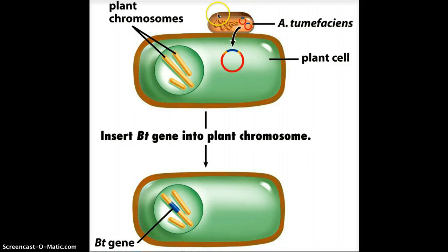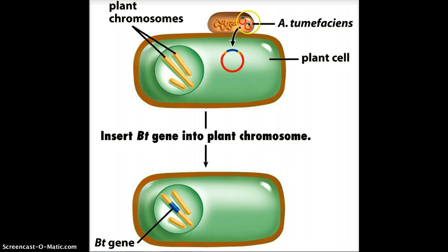Here we have our transgenic bacteria. It's got this recombinant DNA inserted into it. This is the plasmid with the BT gene that's going to make that toxin that kills insects.